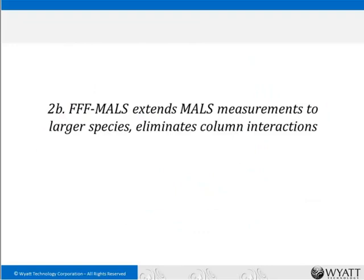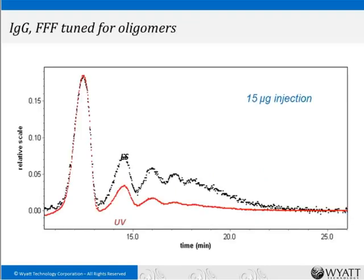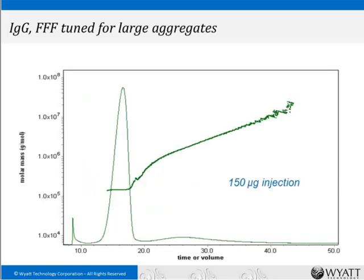For higher-order aggregates and larger species, FFF-MALS is a good approach — it also eliminates column interactions. FFF-MALS is a tunable separation technique: by changing flow parameters, you can zoom in for high resolution of monomer, dimer, trimer, tetramer, etc., or zoom out to see the monomer and aggregates extending into tens of millions of grams per mole. While somewhat more learning-intensive, FFF-MALS can achieve the same or better resolution than SEC over a much larger range of applicability.